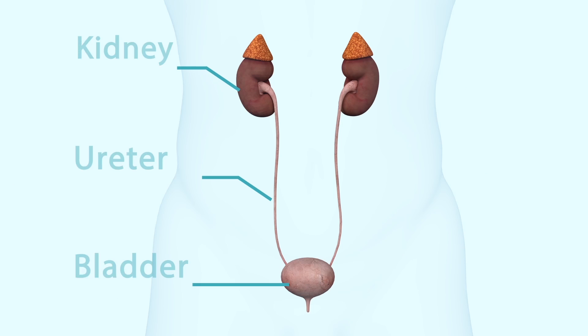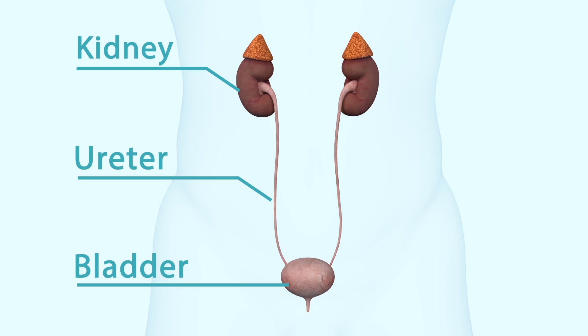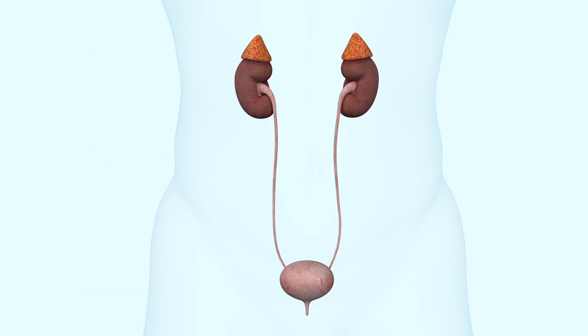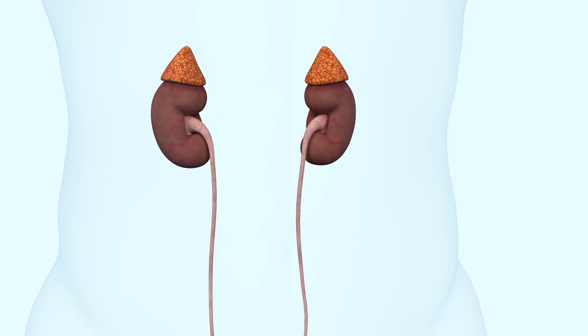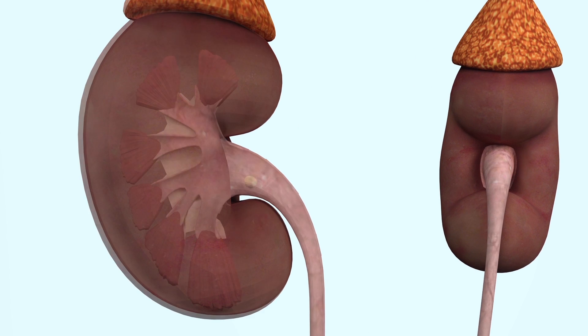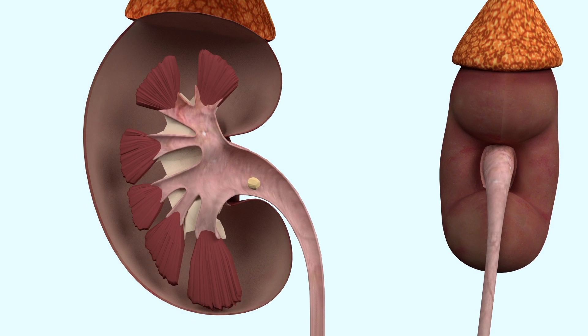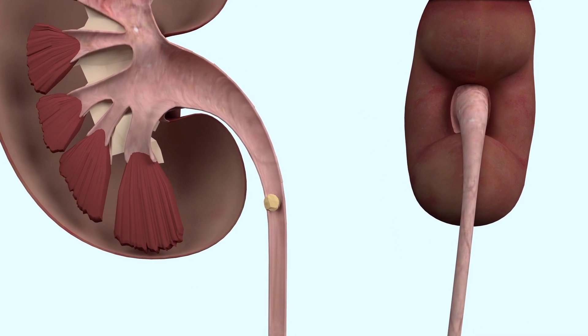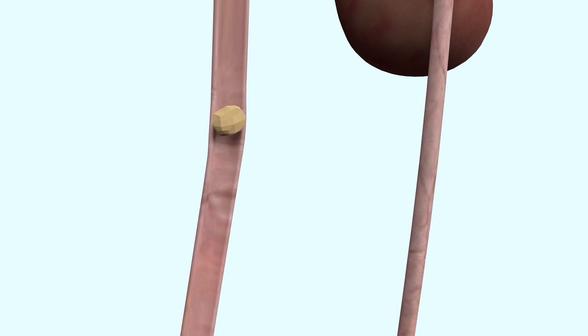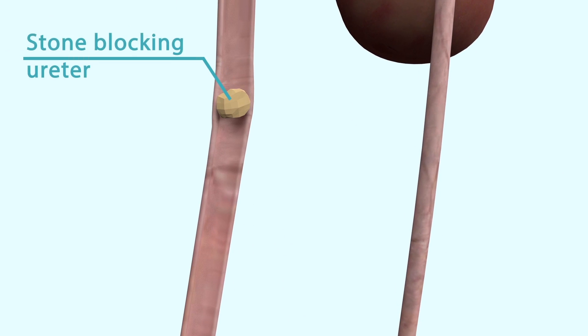This operation is carried out to unobstruct the ureter that is blocked and is usually under a short general anaesthetic. In this instance it is due to a stone obstructing the ureter resulting in poor drainage of urine from the affected kidney.